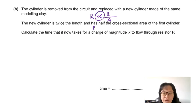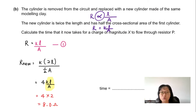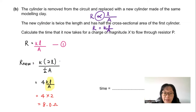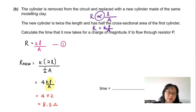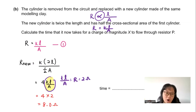Substituting R = 2 Ω, the new resistance is 4 × 2 = 8 Ω. To find the time for charge Q = 900 C to flow through P, I use V = (Q/T) × R, where V across P is 6 V. So 6 = (900/T) × 8, giving T = 7200/6 = 1200 seconds.